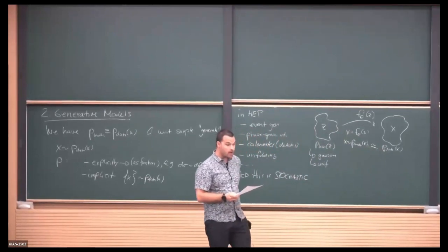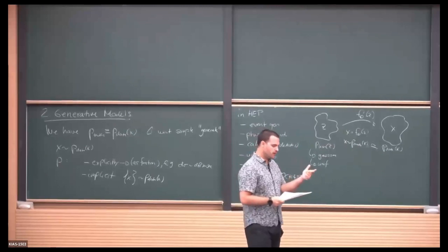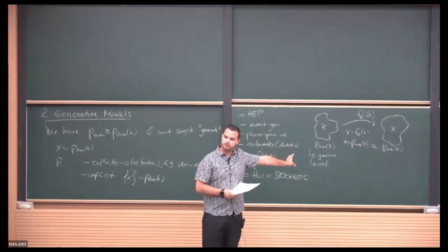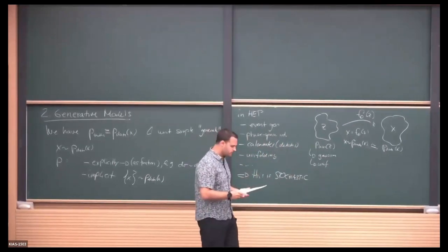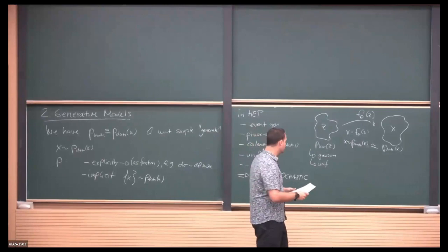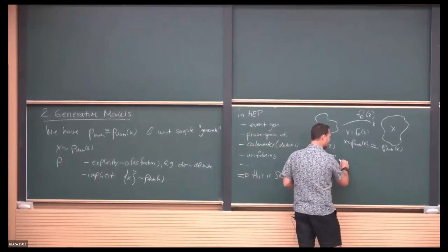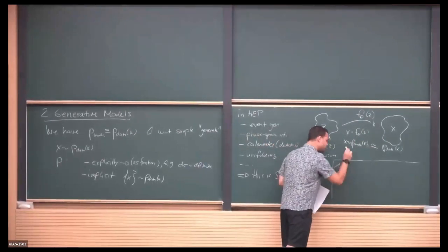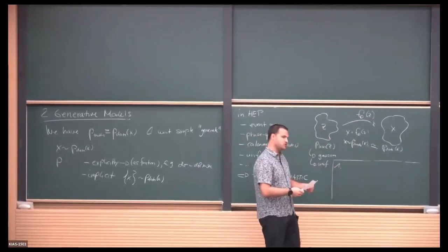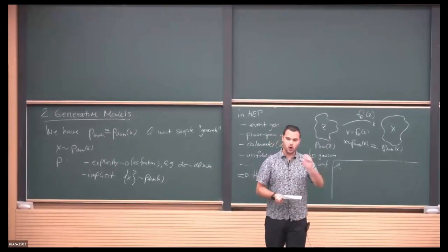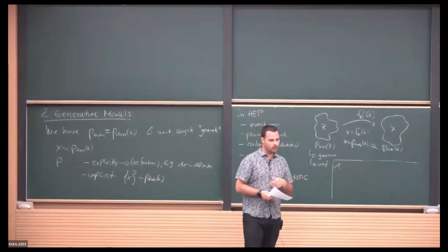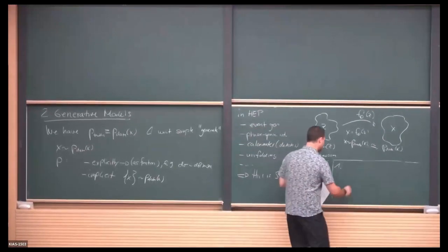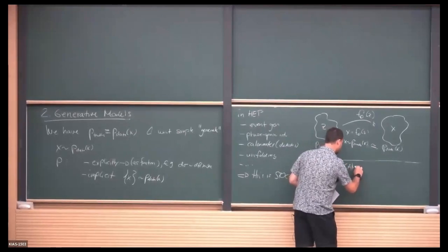So what we actually want: x follows some distribution given by the model, and we want this to match p-data. The question is now twofold: first, how do we construct such a model, and second, how do we train it? There are quite some models around. One of the first that people have in mind — not historically the first but the one I'll introduce first for pedagogical reasons — are generative adversarial networks, or GANs.